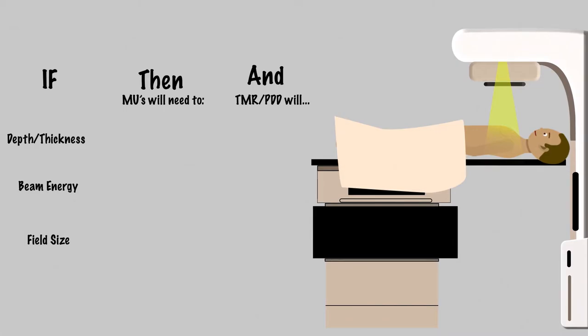Increasing prescription depth means decreasing PDD and TMR, meaning we would need more monitor units to deliver our desired dose. Increasing beam energy means increasing PDD and TMR, meaning we would need less MU in order to deliver our desired dose.